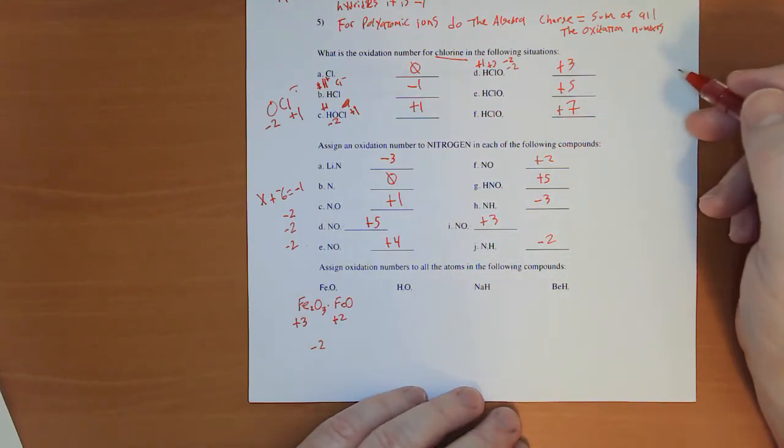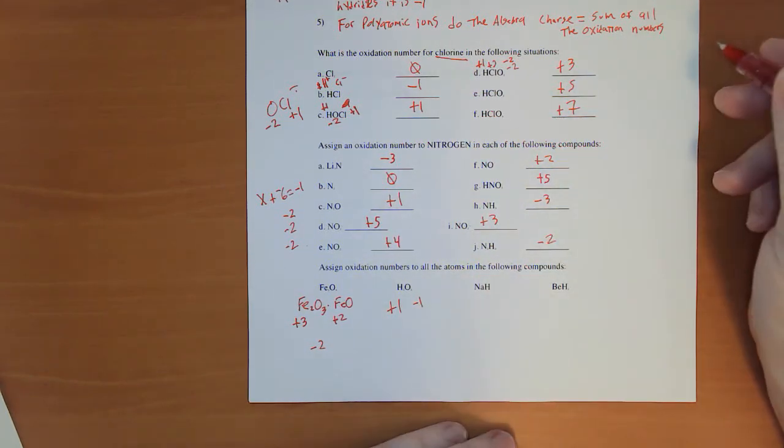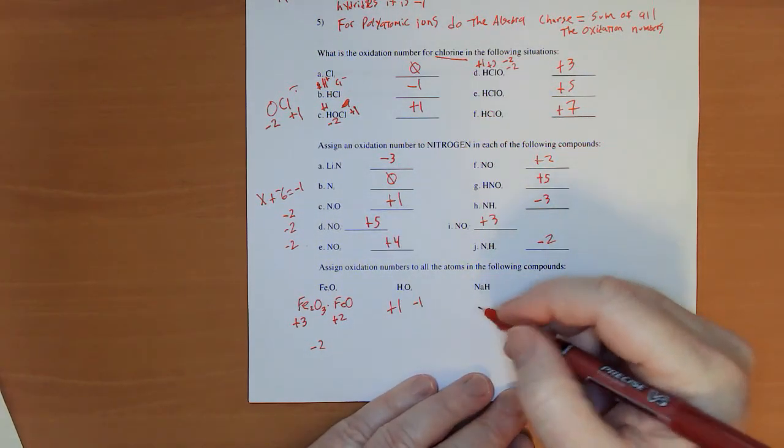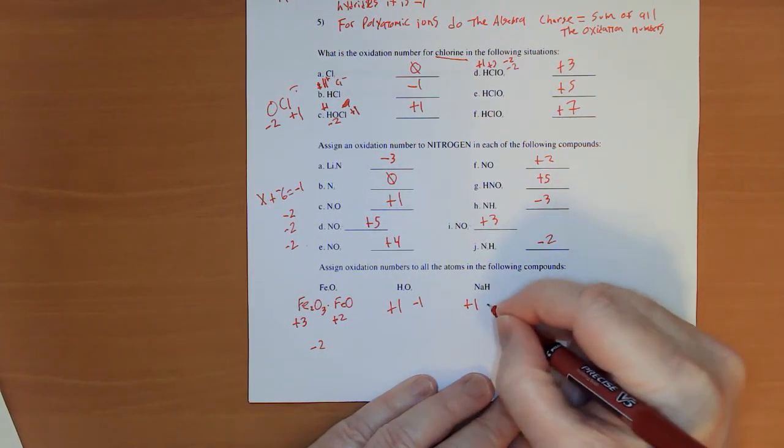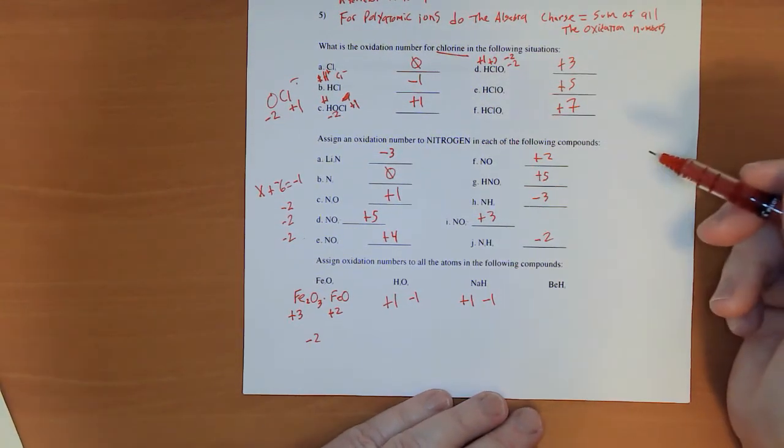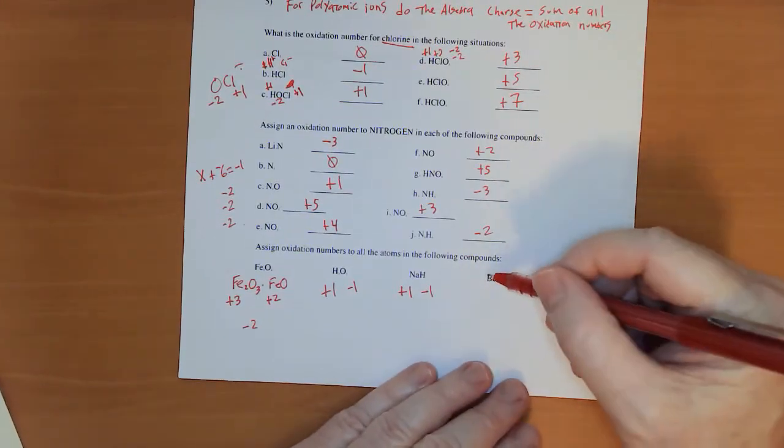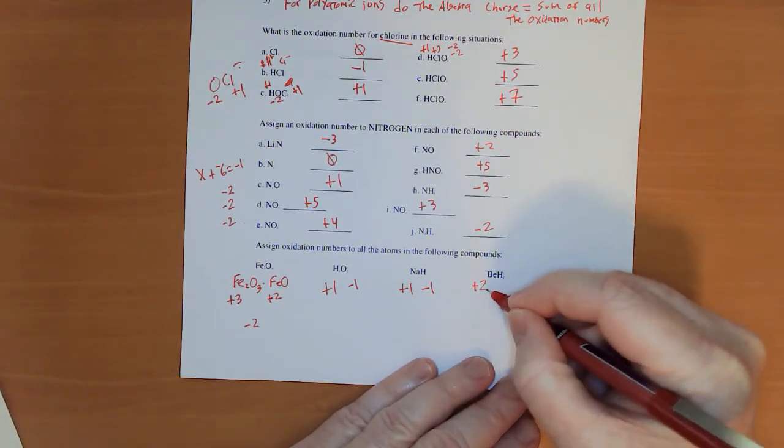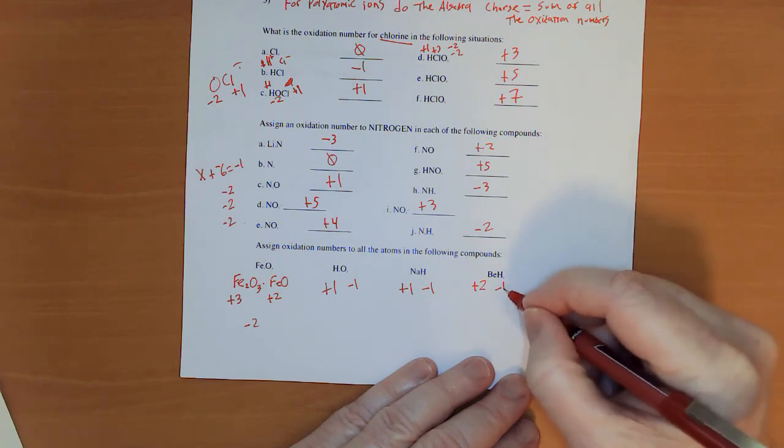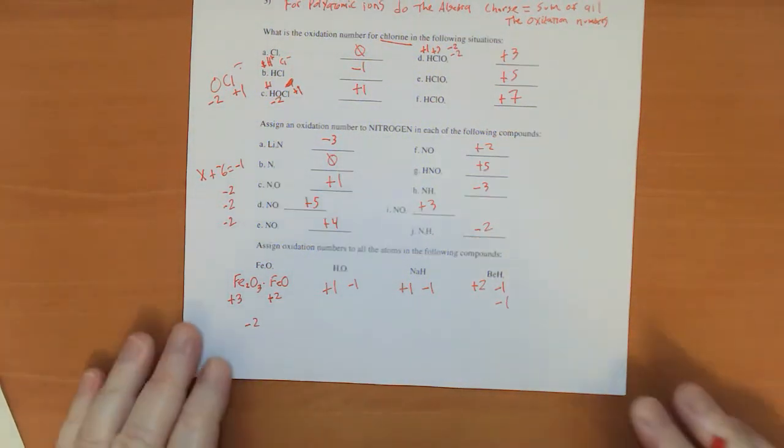This one's hydrogen peroxide, plus one for the hydrogens, minus one for the oxygens. These are both metallic hydrides, plus one for the sodium, minus one for the hydrogen. You can always spot a hydride because the metal's first. Beryllium hydride. Beryllium's plus two. So those hydrogens are minus one and minus one.